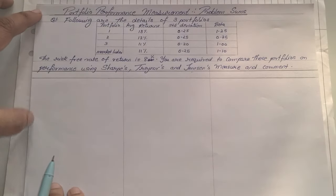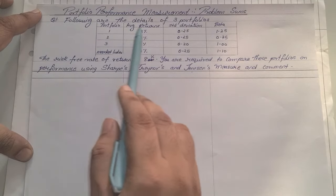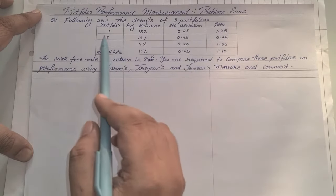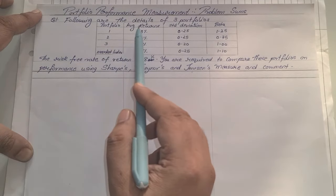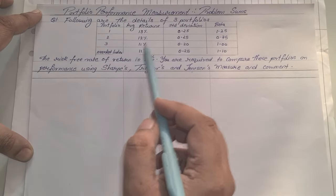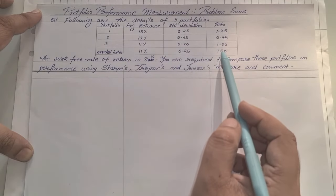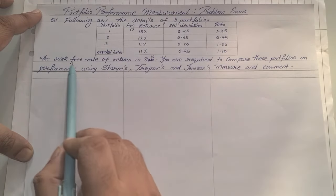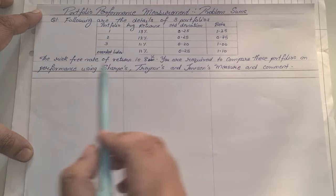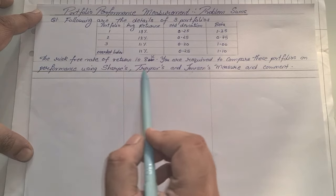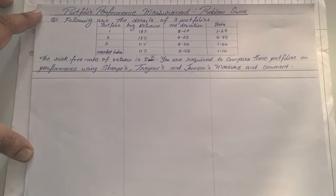Now we'll read out question one. It's given that the following are the details of three portfolios — portfolio one, two, and three — along with the market index. They have given us the average returns, standard deviations, and beta. The risk-free rate of return is 8%. You are required to compare these portfolios on performance using Sharpe's, Treynor's and Jensen's measure, and comment on which one has outperformed the others.